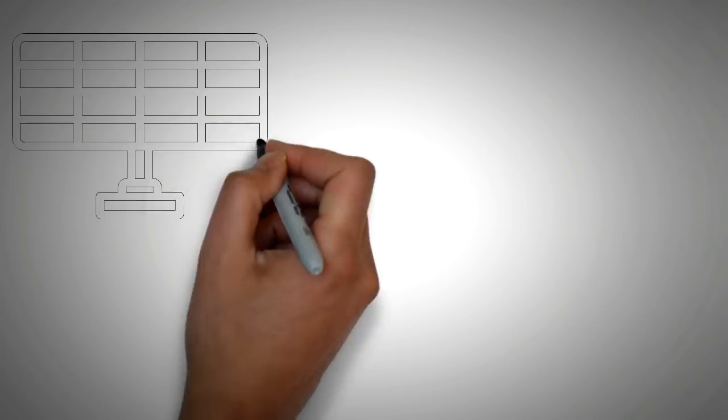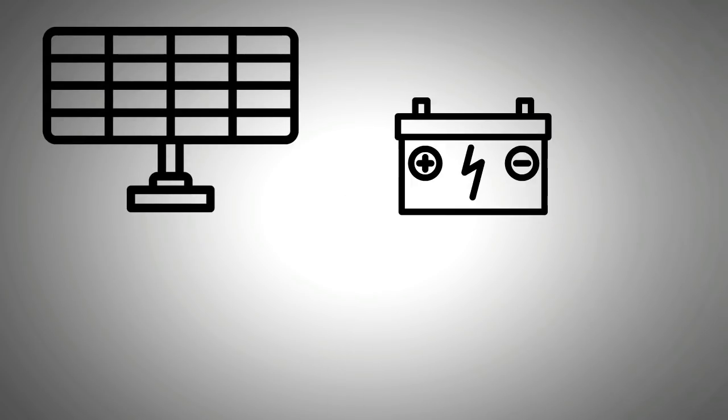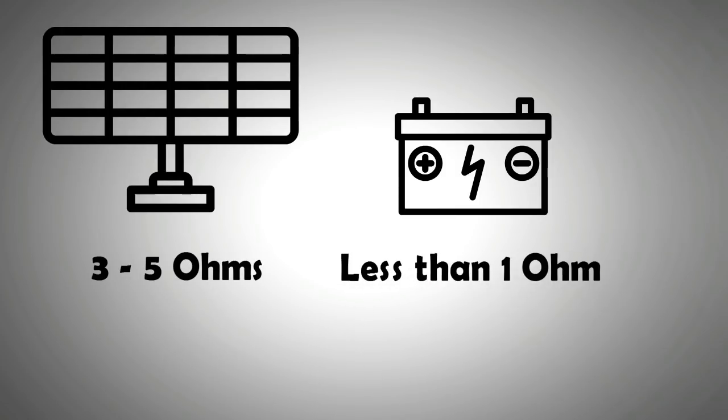To match the resistances is difficult because normally you may have a solar panel which has a characteristic resistance of three to five ohms, and you are trying to connect it to a battery that may have an internal resistance of less than one ohm.